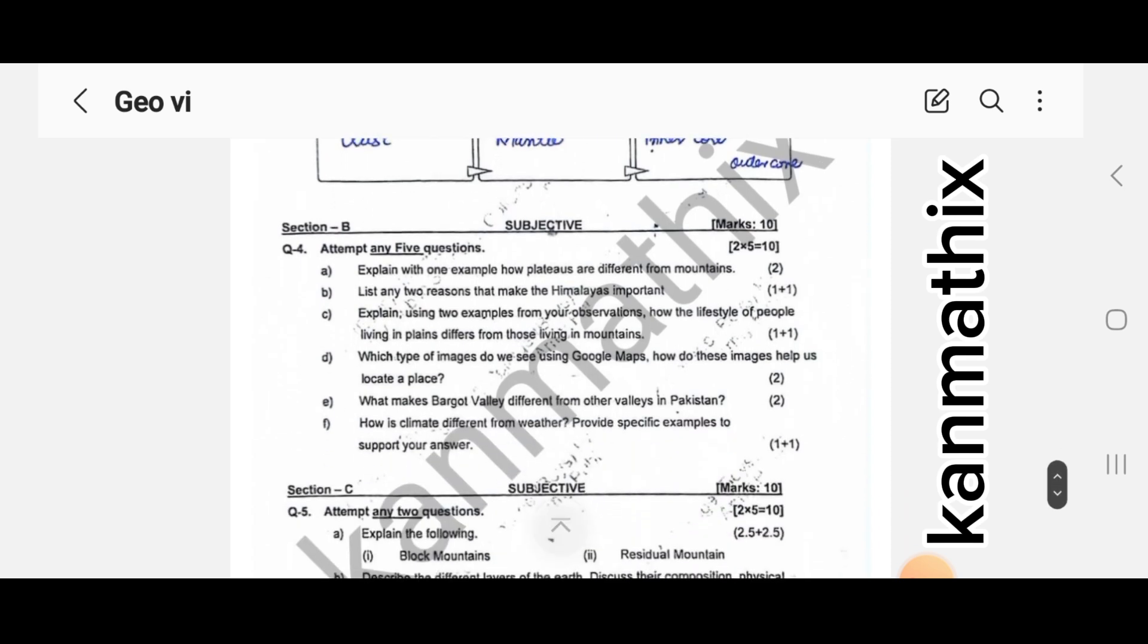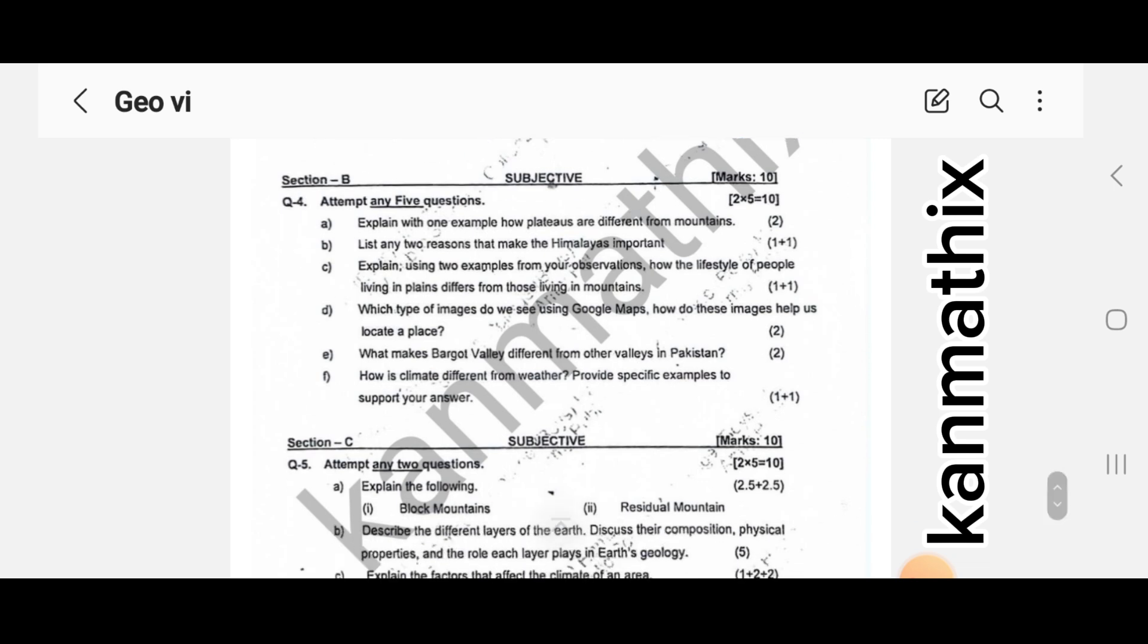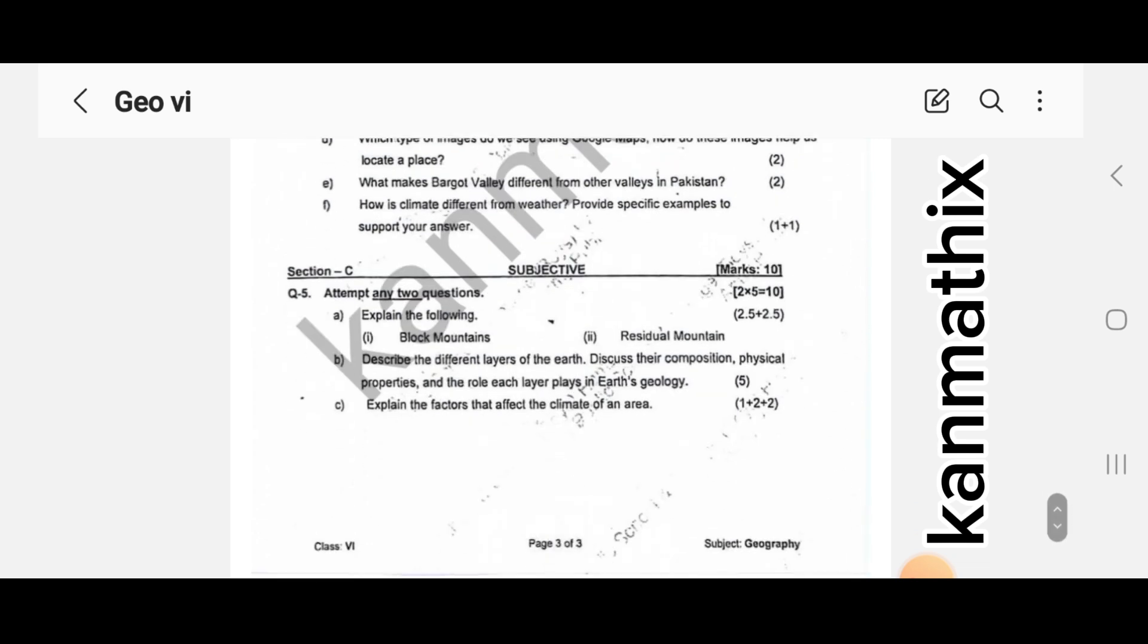Section B had 5 questions and each question carries 2 marks. Short answers had to be given here. Section C, you had 2 questions and each carries 5 marks, so 3 were given to you.